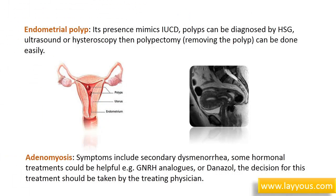Adenomyosis: symptoms include secondary dysmenorrhea. Some hormonal treatments could be helpful, such as GnRH analogs or Danazol. The decision for this treatment should be taken by the treating physician.